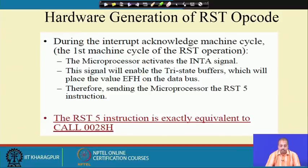RST 5 is equivalent to CALL 0028H, so the processor branches to location 0028. For any other RST instruction, bits D5, D4, D3 change accordingly — RST 0 to RST 7 cycles these bits from 000 to 111, making it easy to generate any RST opcode.